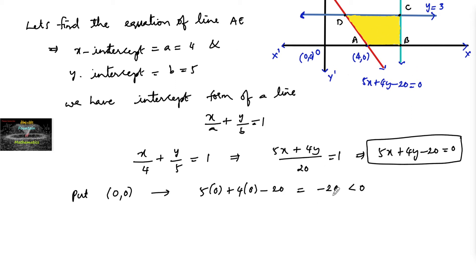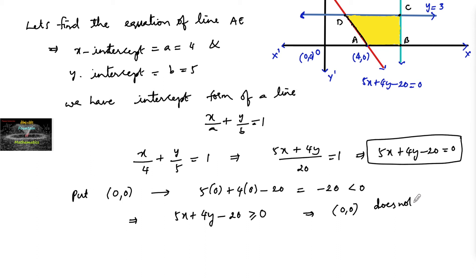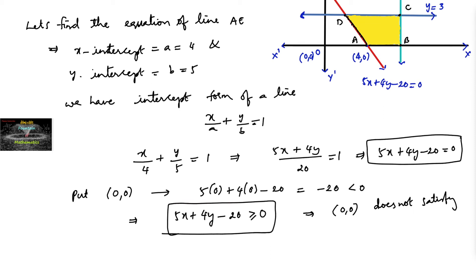Since -20 is negative, it indicates that (0, 0) does not satisfy the inequality. The region is the other half-plane, so the inequality must be 5x + 4y - 20 ≥ 0. Since the line is solid (dark line), we use greater than or equal to. Substituting the origin gives a negative value, confirming the origin is not in the region. So the inequality is 5x + 4y - 20 ≥ 0.